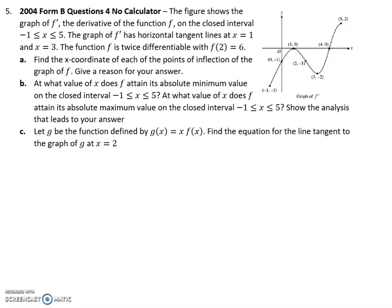I think this is going to be the last one for this video. This one shows the graph of the derivative. That's huge. This is already the derivative graph. It goes from negative 1 to 5. It says I have a horizontal tangent at x equals 1, so that is a 0 there, and at x equals 3. The function is twice differentiable and I know that f(2) is 6. Find the x coordinate of each of the points of inflection of the graph. This one should be easy. Do you know that the points of inflection are the maxes and mins of the derivative? They are. So that would be x equals 1 and x equals 3.